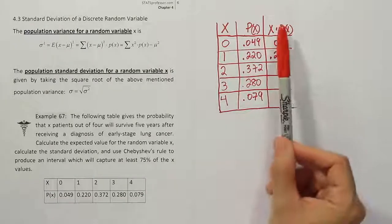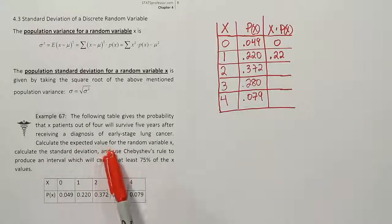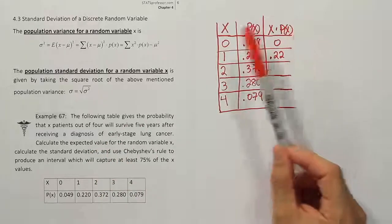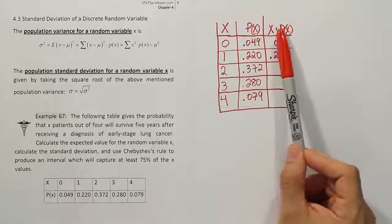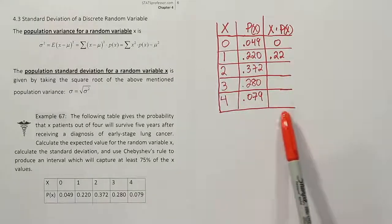And I've showed the start of the process that we have to use to get the expected value. So we already saw videos on how to do that. We have to multiply the X times P of X columns, or sorry, the X and the P of X columns to get the X times P of X column. And then when we're done, we'll add that up. That will give us our expected value. So we're going to do that first.